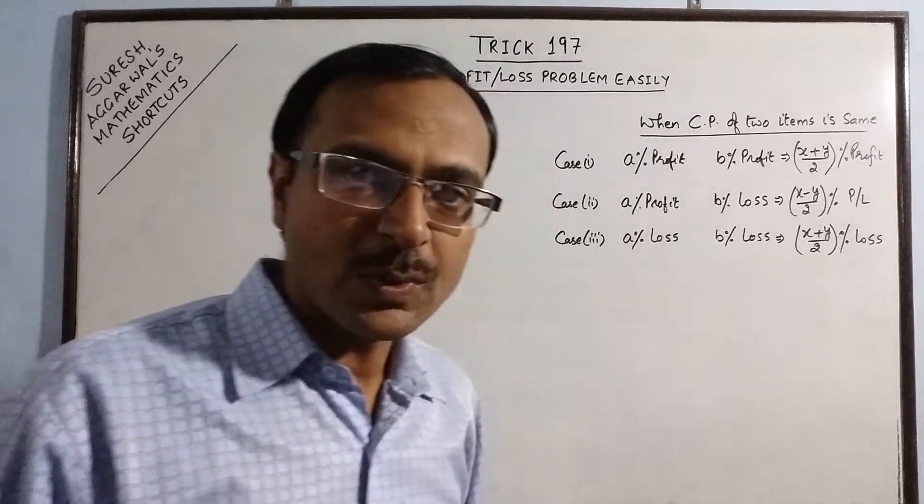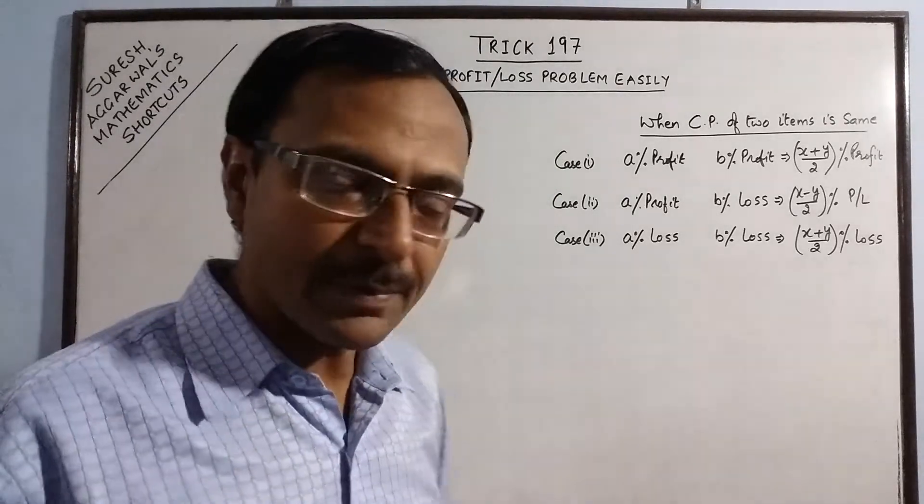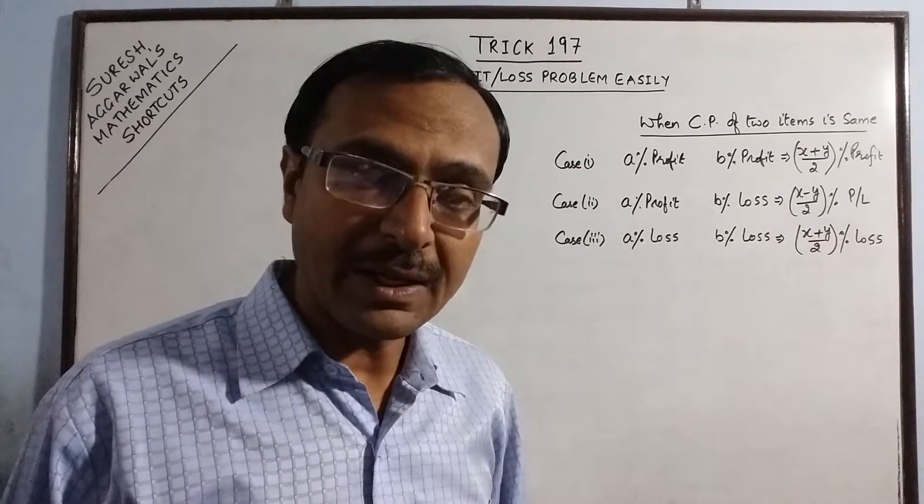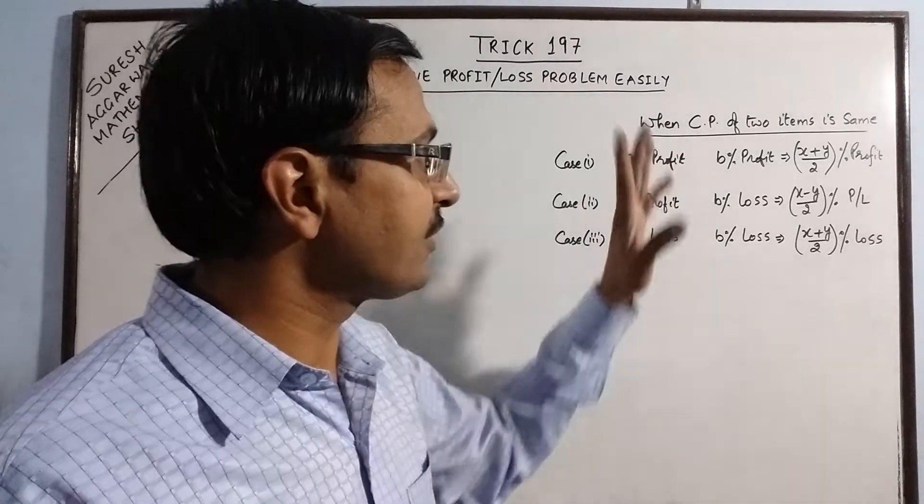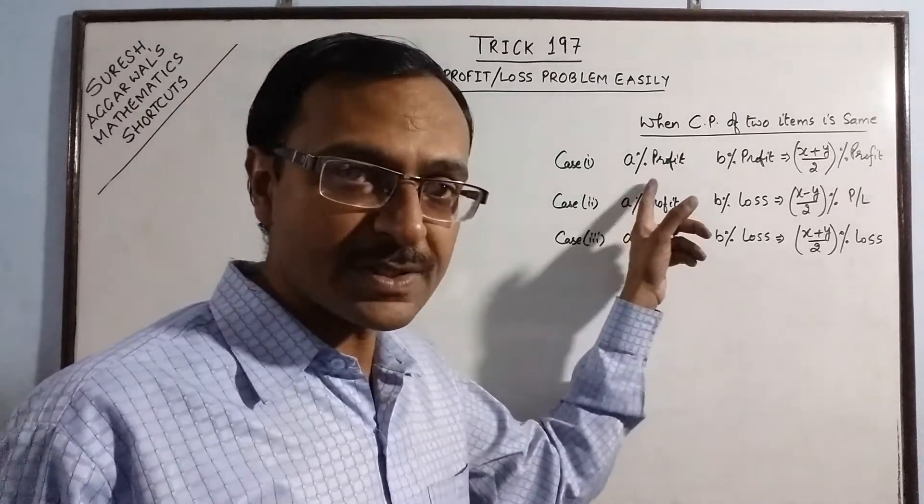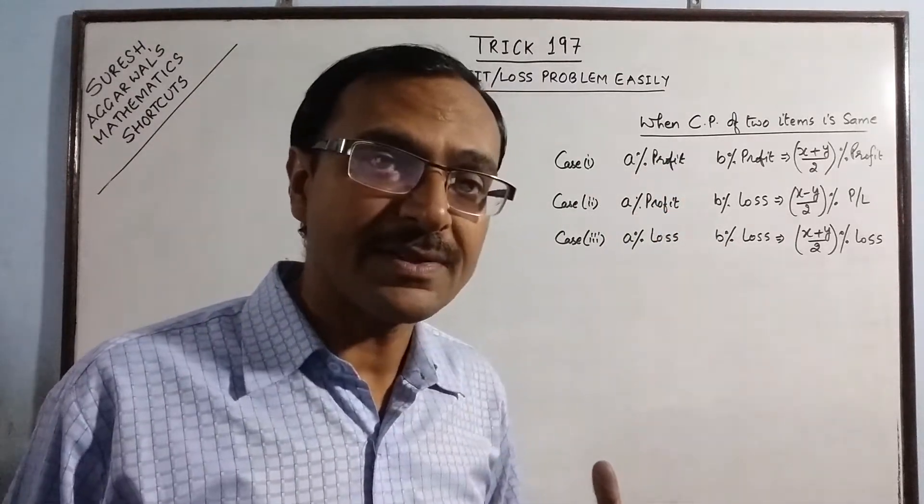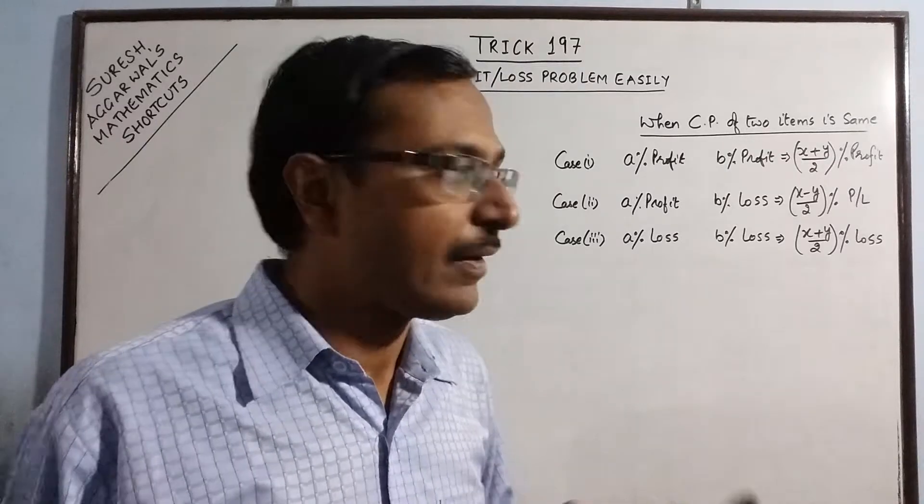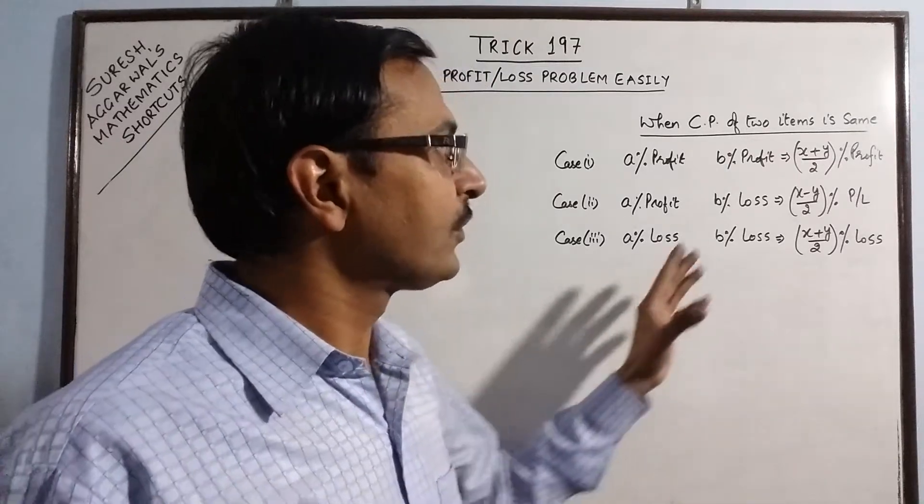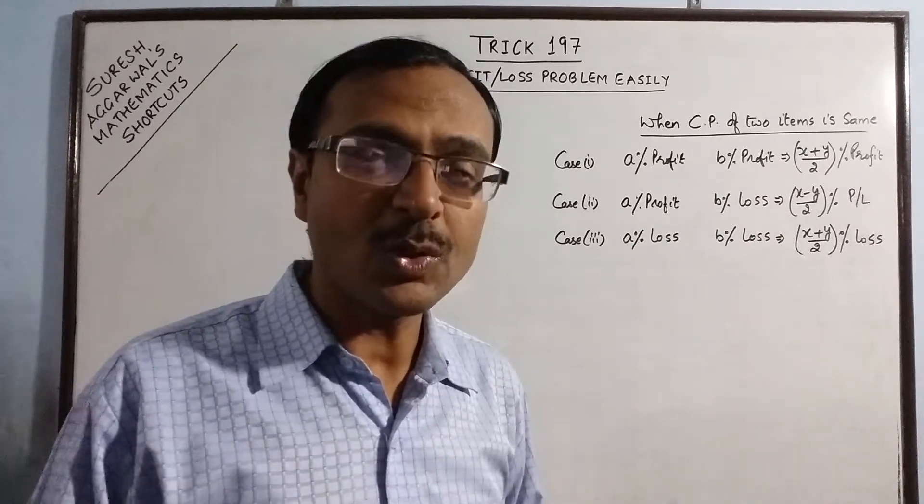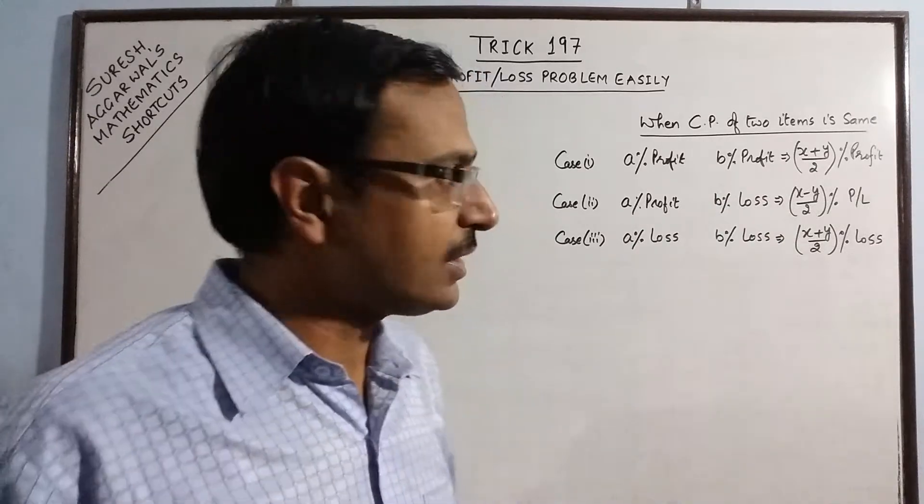Now students when they deal with such problems, they take two cases. They take the cost price of the first item, profit or loss percentage on that particular item, then they find the selling price and ultimately they find the overall profit or loss percent.